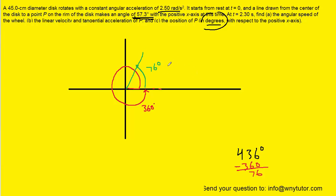So that means we would just have to go an additional 76 degrees to get this final angle. So we could report the angle as 76 degrees counterclockwise from the positive x-axis. So that could be the final answer to part C.